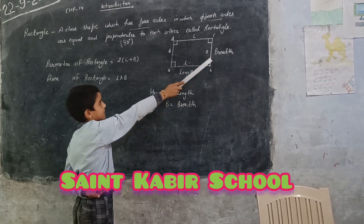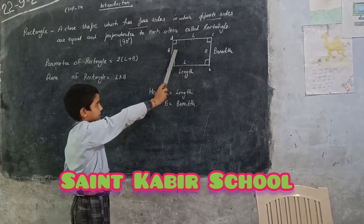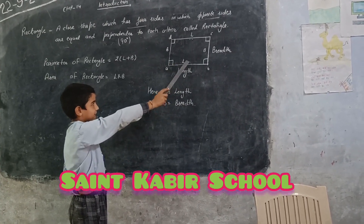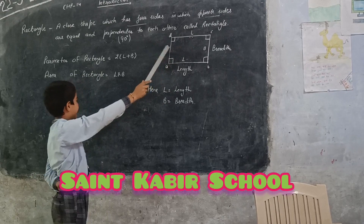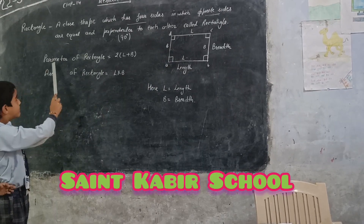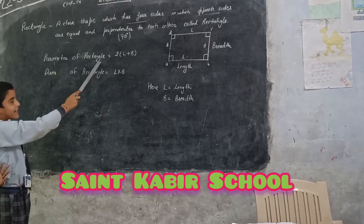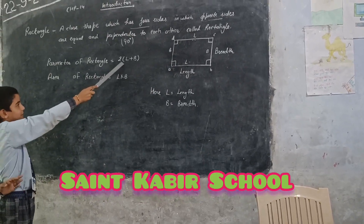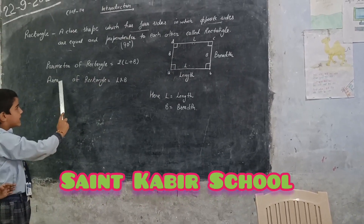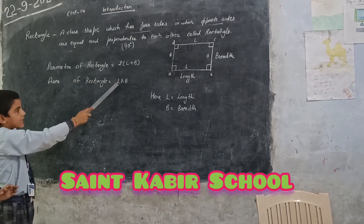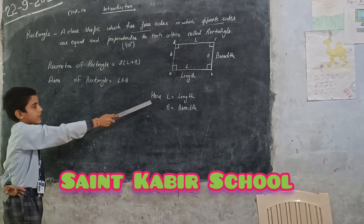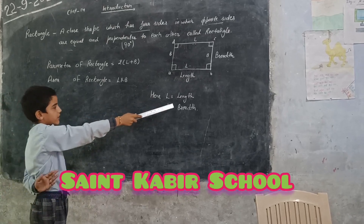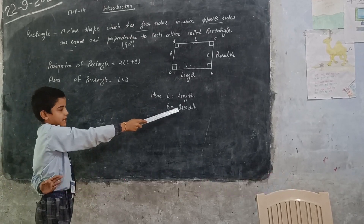The area of a rectangle is equal to L times B, where L is the length and B is the width.